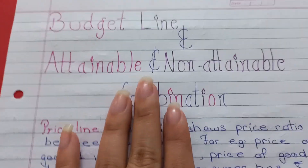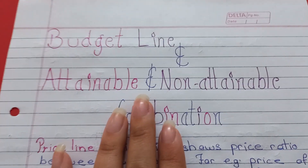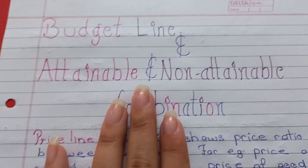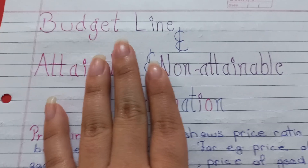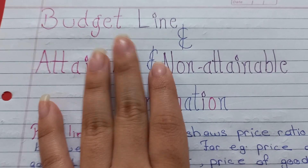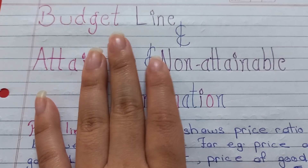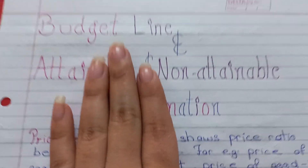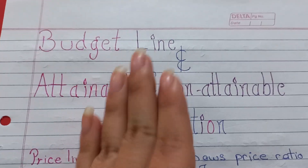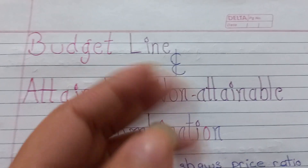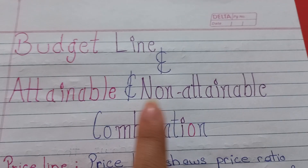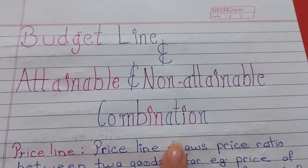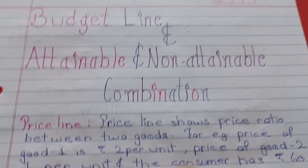Hello everyone, I welcome you to the Economics Hub. In the previous session, we studied about budget set and budget line. In this session, we are going to study more about budget line and attainable and non-attainable combinations.